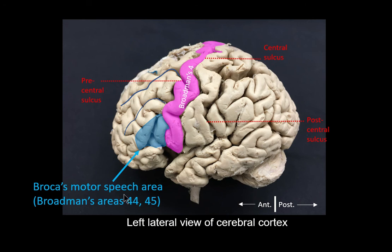This area is also known as Brodmann's area 44 and 45. In the majority of individuals, this area is important on the left or the dominant hemisphere, which is why we are looking at the left hemisphere of the brain. An ablation or any lesion in this region will result in the paralysis of the motor component of speech. Ablation in the non-dominant hemisphere, which is mostly the right hemisphere, has no effect on speech.